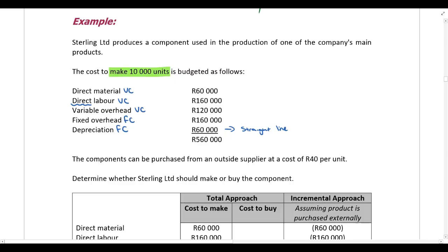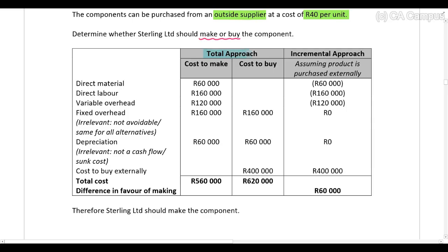The units can be purchased from an outside supplier at 40 rand per unit, and we need to determine whether they should make or buy the components. I'm showing you both approaches for completeness, but in practice you would only perform one. If the question is silent, select the approach you're more comfortable with — the total approach is recommended as it's much easier.